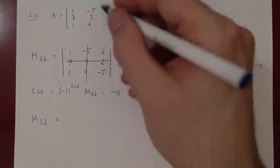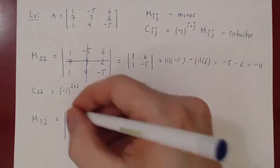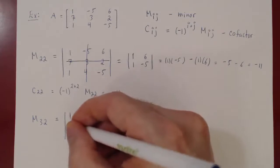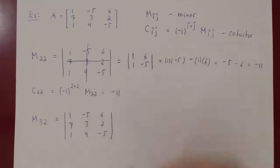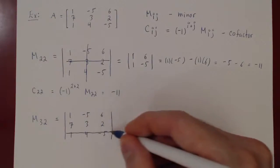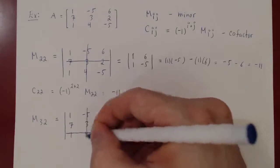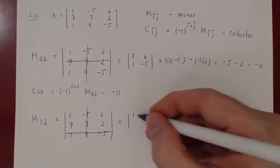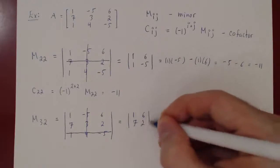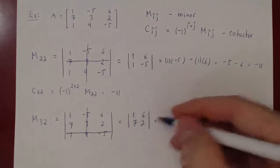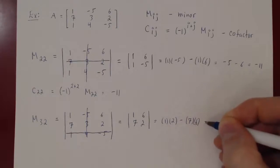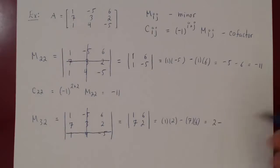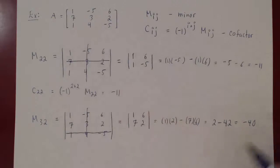Let's compute M32. Starting with matrix A — (1, -5, 6), (7, 3, 2), (1, 4, -5) — we delete the third row and second column, leaving the 2 by 2 matrix (1, 6; 7, 2). The determinant is AD minus BC: 1 times 2 minus 7 times 6, which is 2 minus 42, giving negative 40. So the minor M32 of matrix A is negative 40.